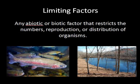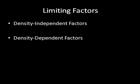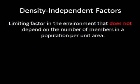Which brings us to population limiting factors. A limiting factor is any abiotic or biotic factor that restricts or limits the numbers, reproduction, or distribution of organisms. The population of fish in this lake, for example, could be limited by the size of the lake or how many other organisms are in the lake. There are two types of limiting factors: density independent and density dependent. Density independent factors are limiting factors in the environment that do not depend on the number of members in a population per unit area. Think of some examples — what could limit a population in an area that has nothing to do with how many individuals are living in that population?